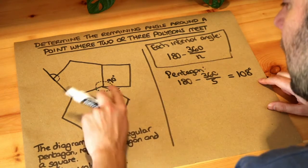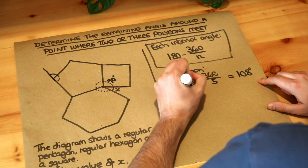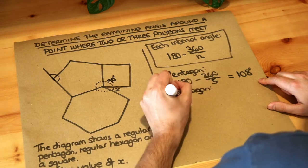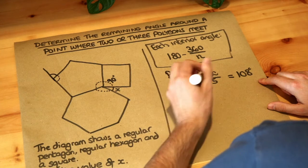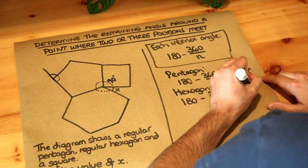What shape is this? This is a regular hexagon, six sides. So for the hexagon we do 180 minus 360 over six and that is 120 degrees.